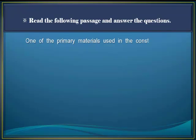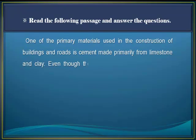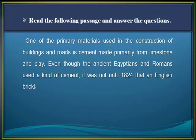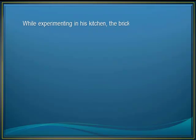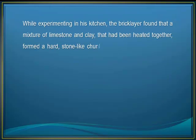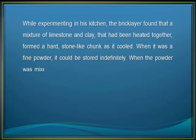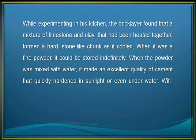One of the primary materials used in the construction of buildings and roads is cement, made primarily from limestone and clay. Even though the ancient Egyptians and Romans used a kind of cement, it was not until 1824 that an English bricklayer developed a cement strong enough for modern roads and buildings. While experimenting in his kitchen, the bricklayer found that a mixture of limestone and clay that had been heated together formed a hard stone-like chunk as it cooled. When it was a fine powder, it could be stored indefinitely. When the powder was mixed with water, it made an excellent quality of cement that quickly hardened in sunlight or even underwater. With only a few variations, this is how cement is made today.